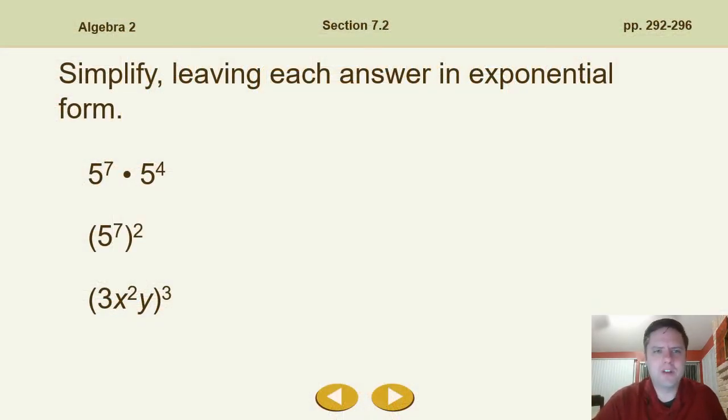All right. So first of all, understand here that whenever we're simplifying something, we're just going to leave each answer still in exponential form. I'm not looking for you to move it out of that. So if we're simplifying this very first one, what do we do if we have the same base and we're multiplying them together and we've got different exponents? You should remember that we just add them together, and so you should get 5 to the 11th. What about this one when we're raising one exponent to another one? Remember, you're just then multiplying them together.